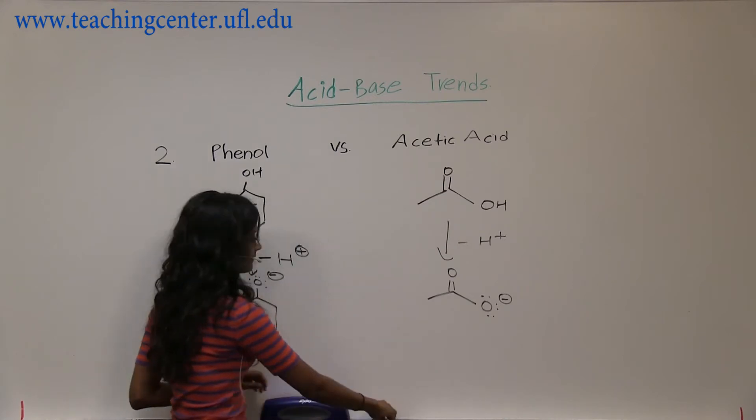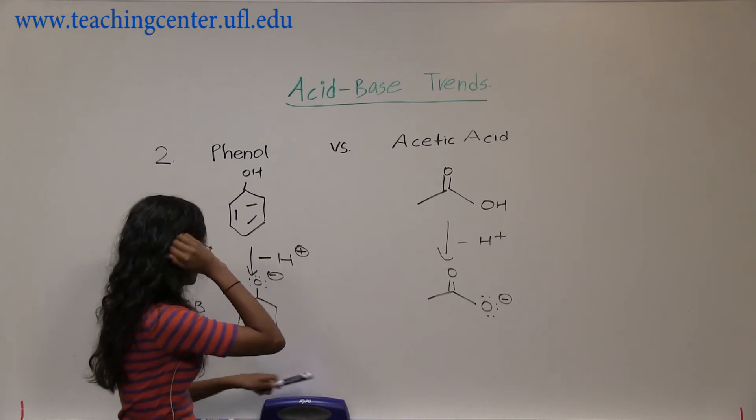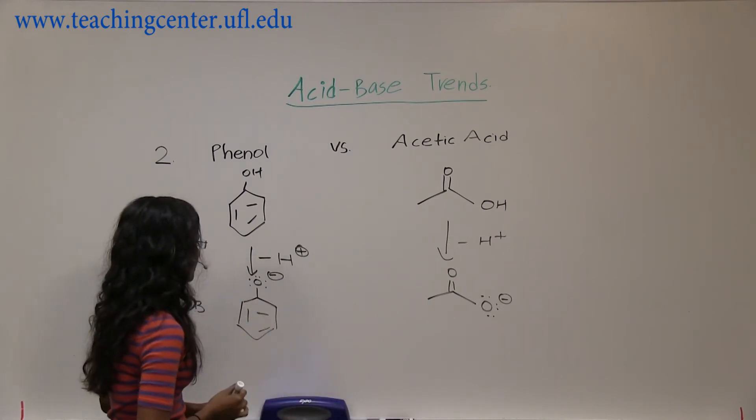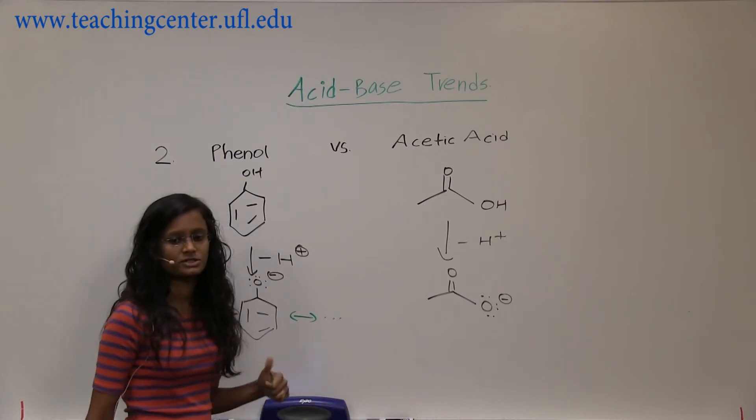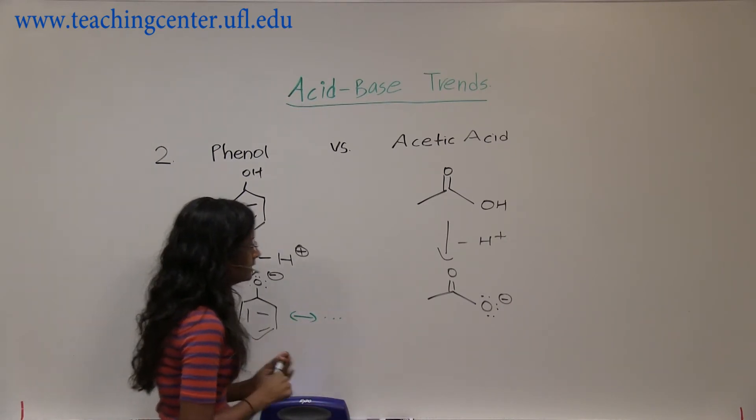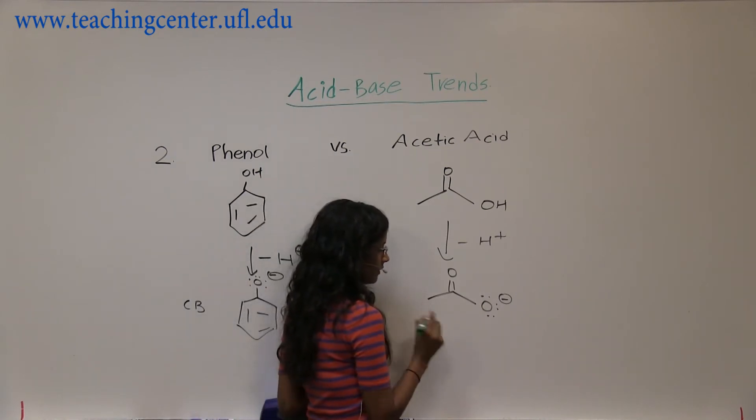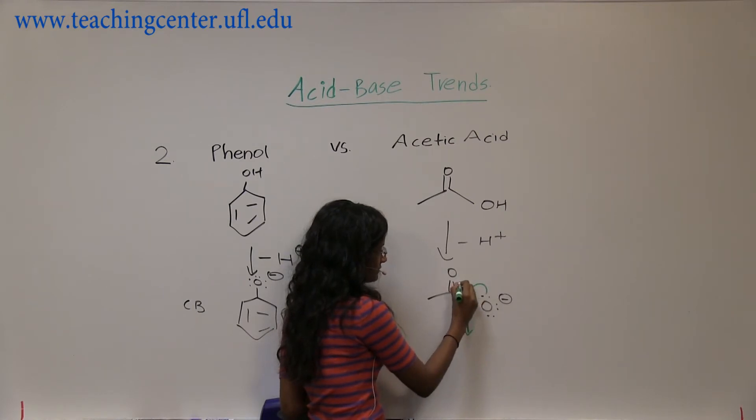This one is going to be the one like that. Alright, so these are the two conjugate bases that we drew. Now we already know we have four different resonance structures for this, so we just did it in the last problem. Here we're going to have one other resonance structure where your negative charge shifts.